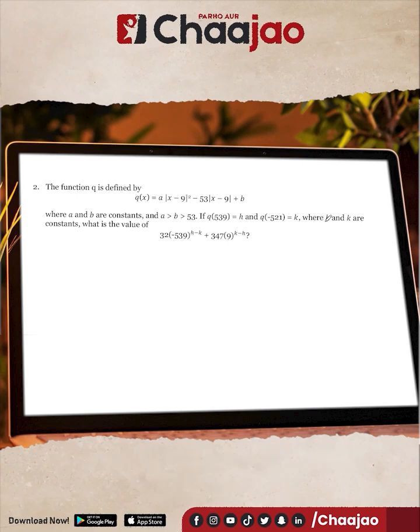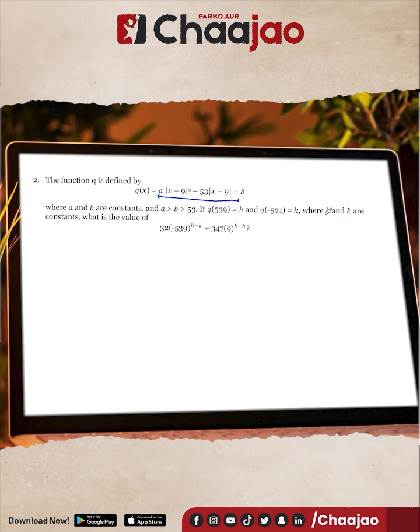The function q is defined by a modulus equation which has a lot of constants. The first coordinate given is x = 539 and the value of y or q of x should be h. If you put 539 here and here, you're going to create one equation in terms of h and all the other constants.